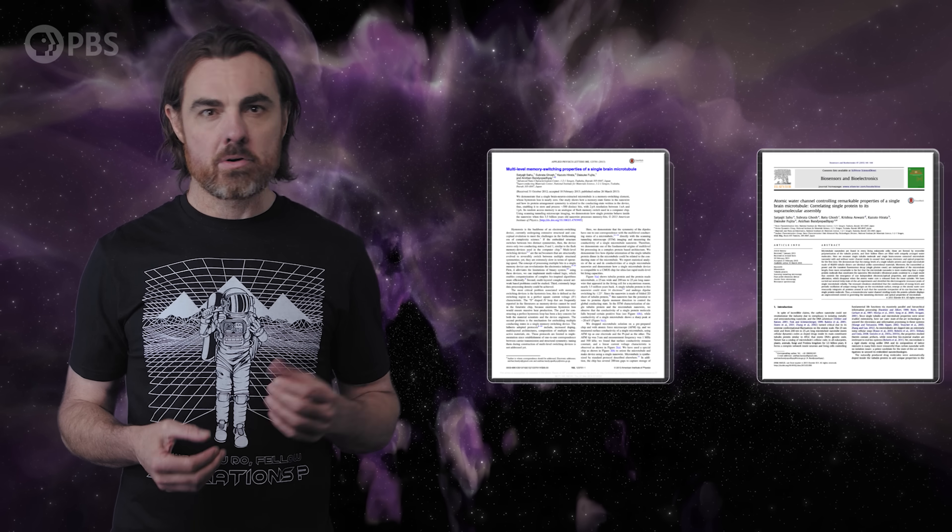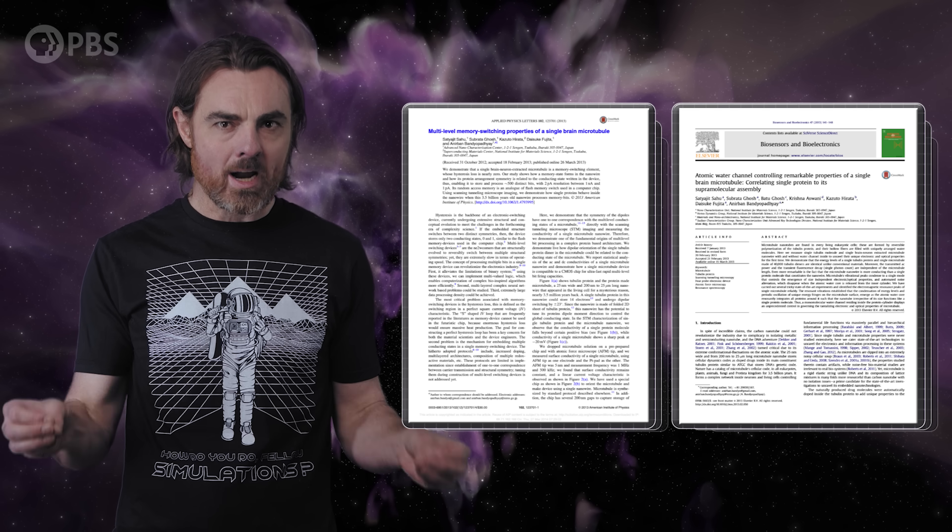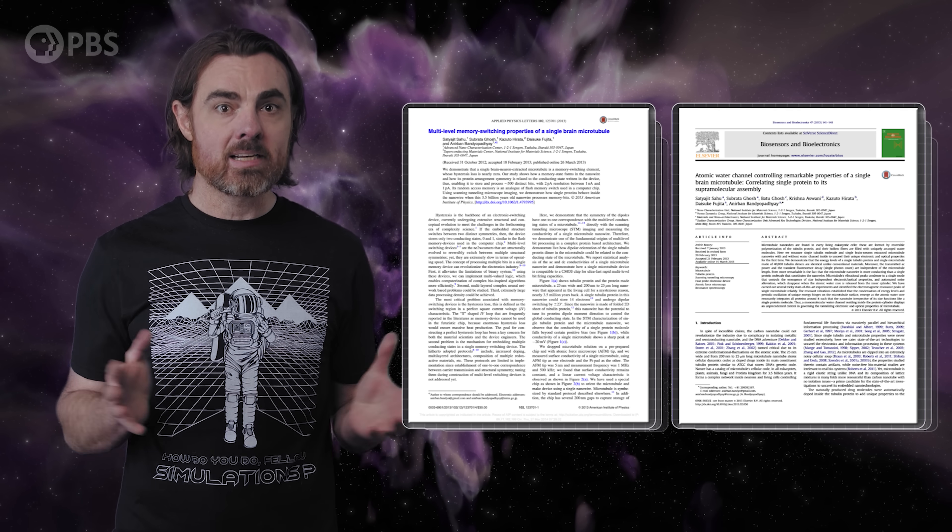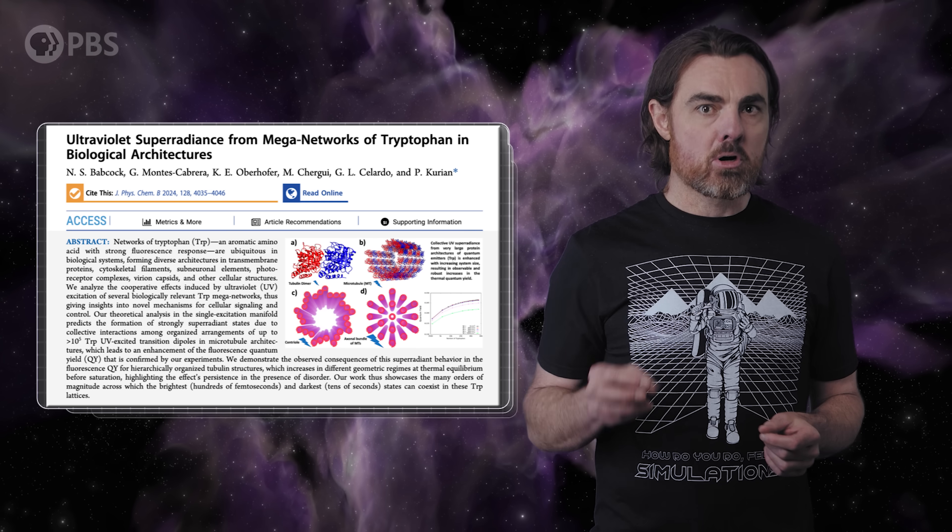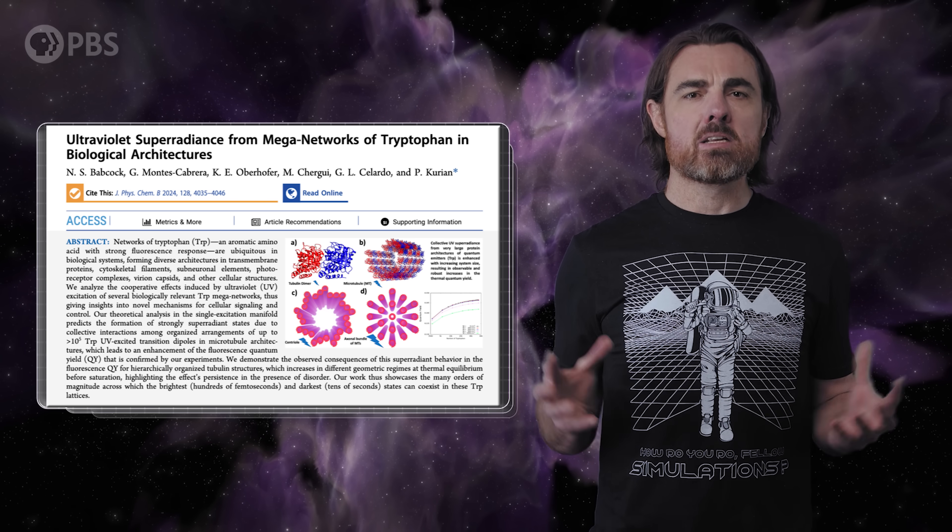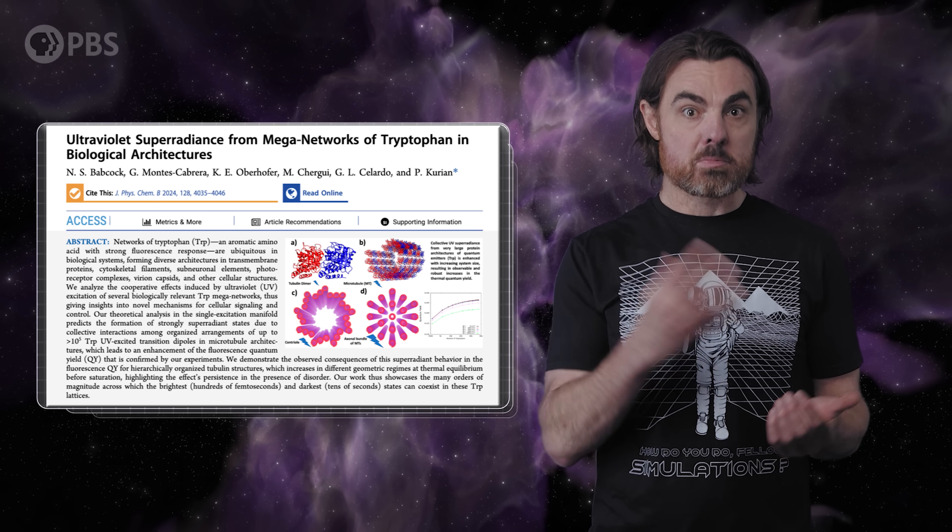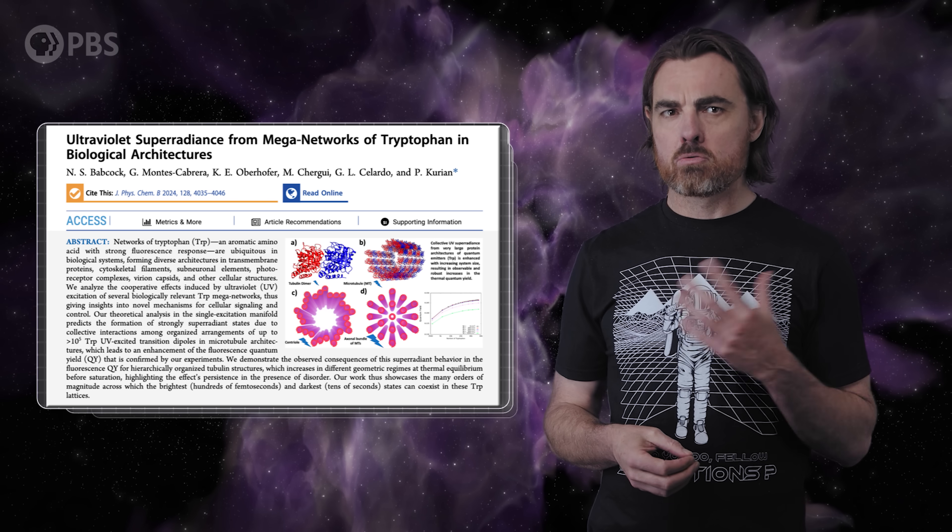Which brings us to the reason we're doing this episode now. Evidence is emerging that microtubules may exhibit interesting quantum behaviors after all. In 2013, evidence was found that microtubules display large-scale quantum resonance, giving them unusual long-range electrical conduction properties and potentially allowing them to work as memory-switching elements. And just a few months ago, a paper came out adding weight to this idea. It's by Nathan Babcock and Philip Kurian from Howard University and their collaborators, and it's titled, Ultraviolet Superradiance from Mega Networks of Tryptophan in Biological Architectures. Now, those mega networks of tryptophan are basically microtubules, but to rock the rest of that title, we need to understand superradiance.